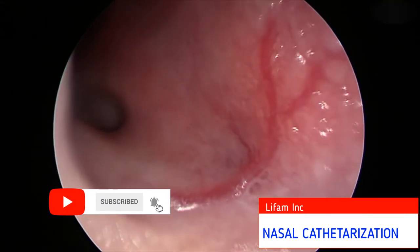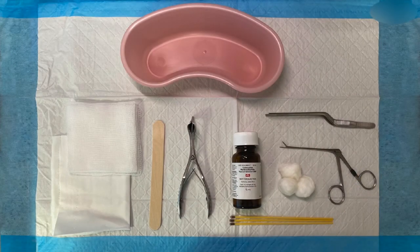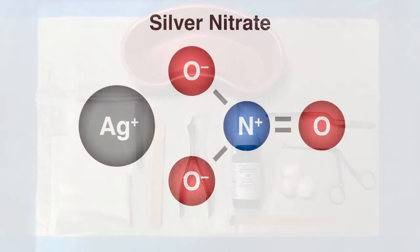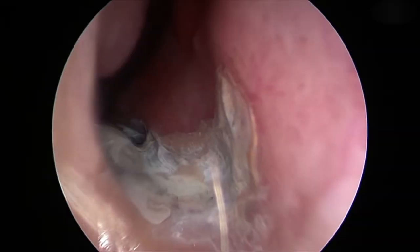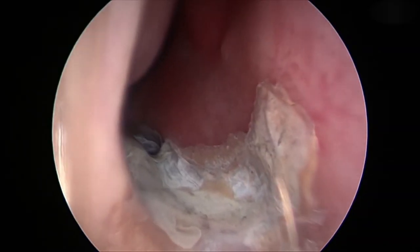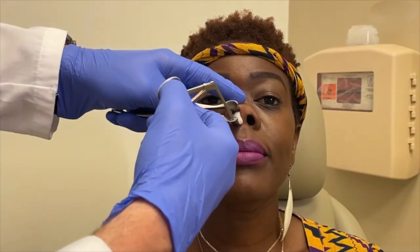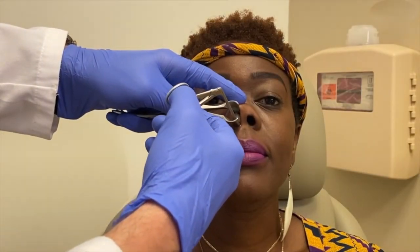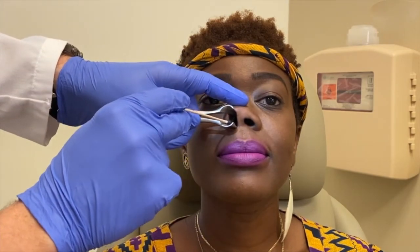Nasal cauterization with topical silver nitrate is a common and reliable intervention for the treatment of recurrent or active epistaxis. The release of silver ions forms an eschar that obstructs and scleroses blood vessels. This video demonstrates the evaluation of a patient with recurrent epistaxis and the technique for performing nasal cauterization with silver nitrate in the office.